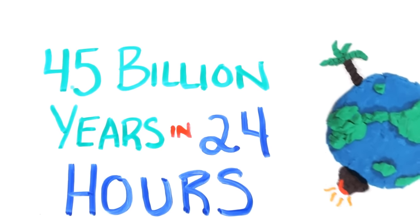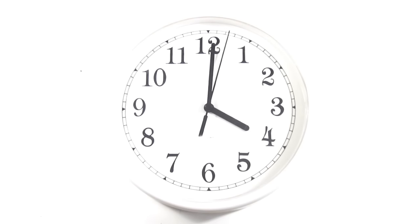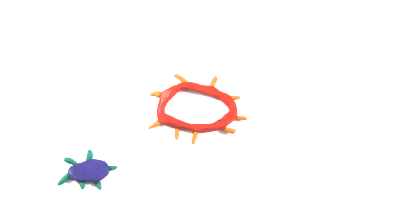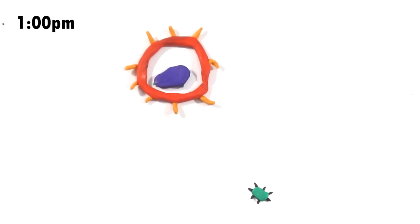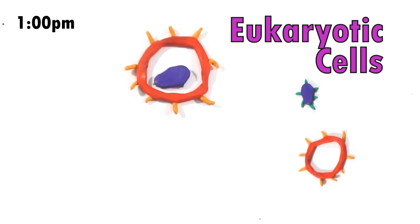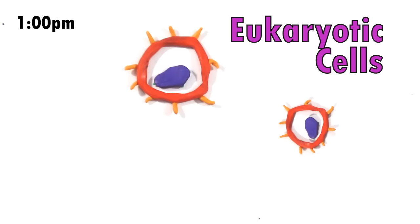The story begins early in the morning, around 4 a.m., with the rise of the first simple, single-celled organisms. However, these organisms are destined to spend quite some time alone. At 1 p.m., a simple cell engulfs another, creating a symbiotic relationship and the first eukaryotic cells, or cells with internal organs.